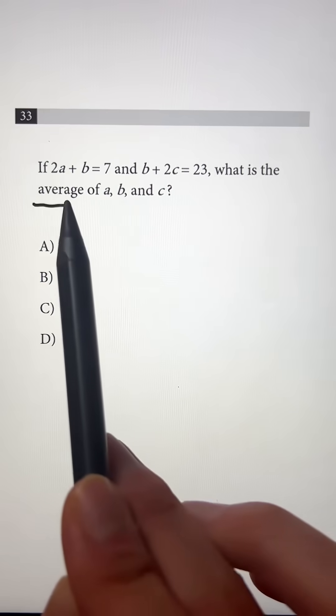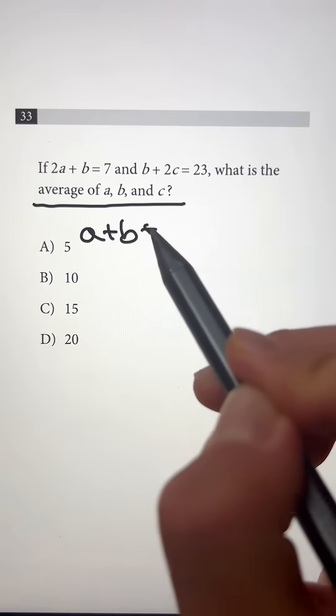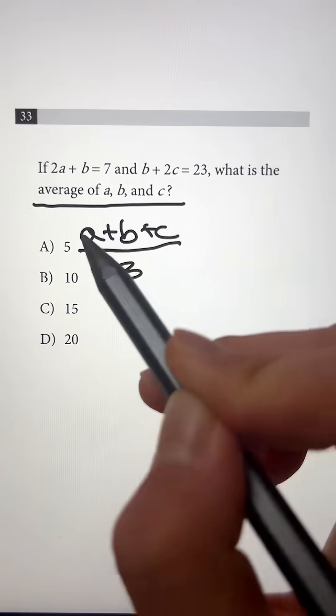So to start, let's explain what this is. The average of a, b, and c means we're going to add a plus b plus c together and divide that by 3 because there's three terms in here.